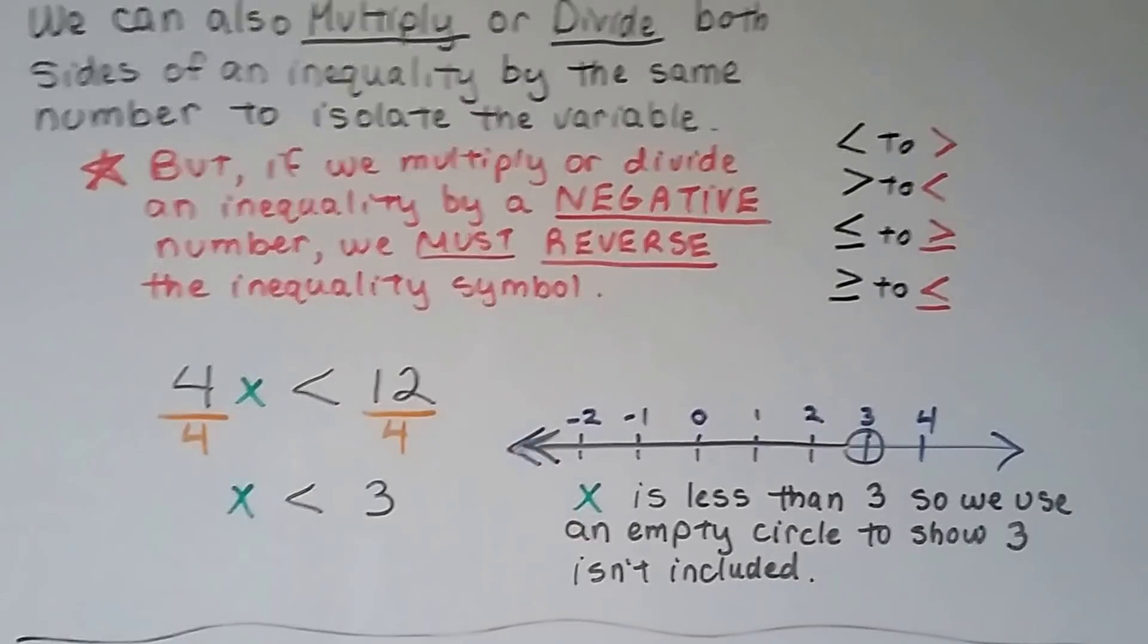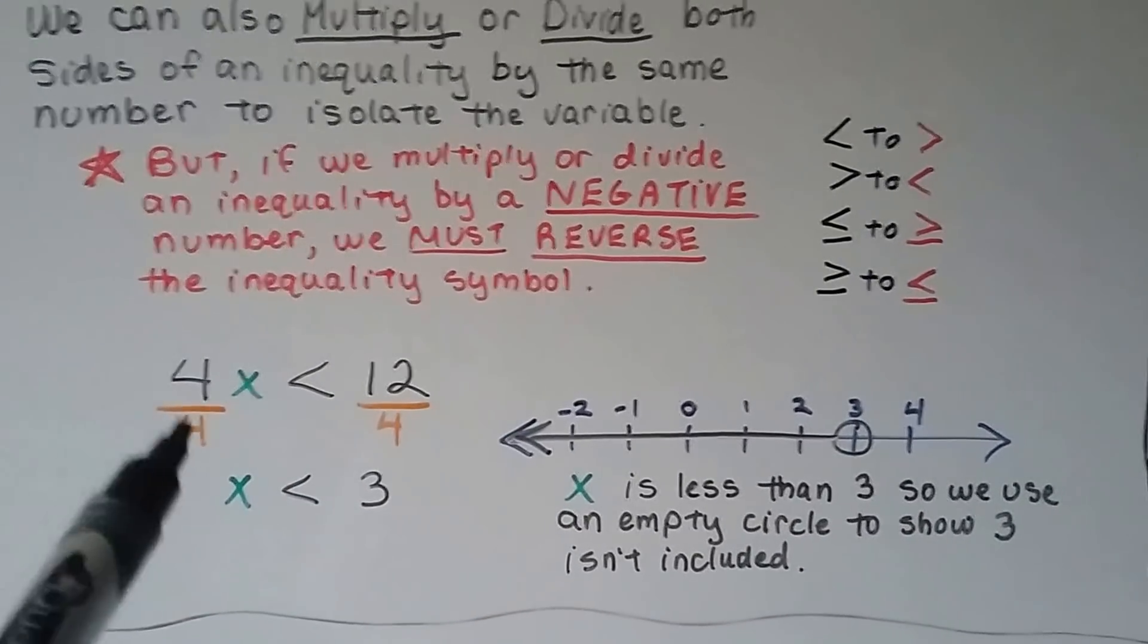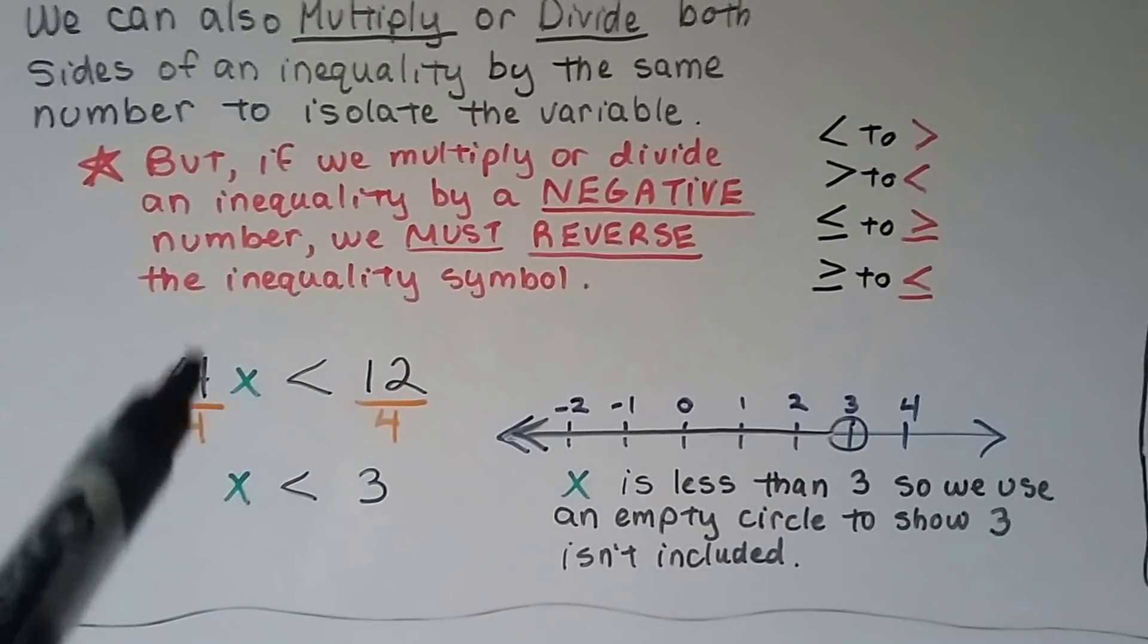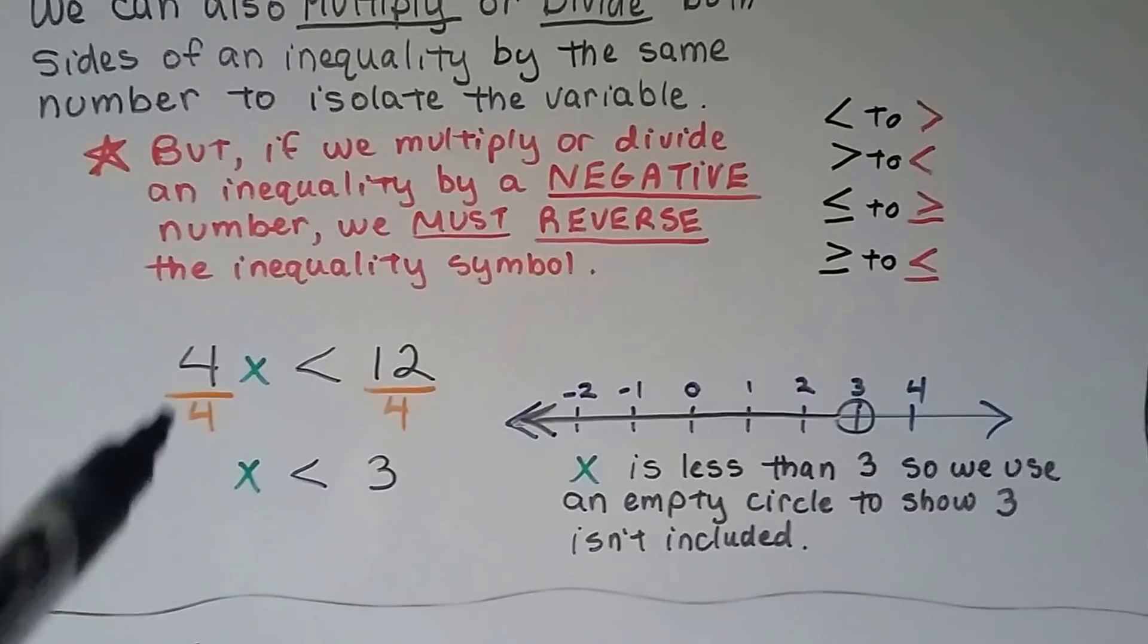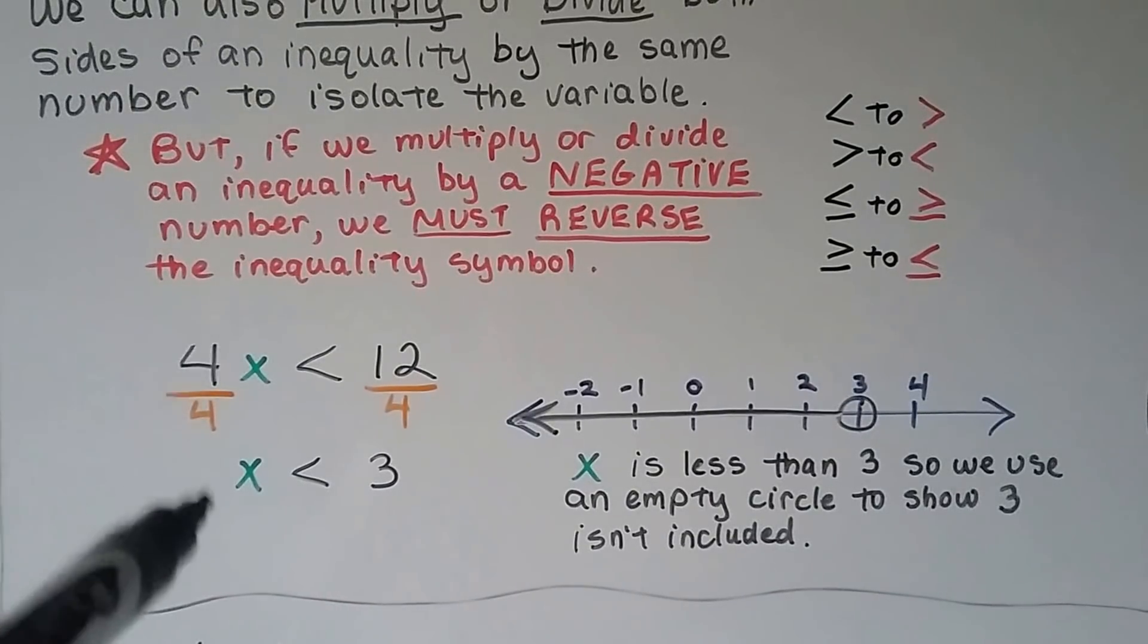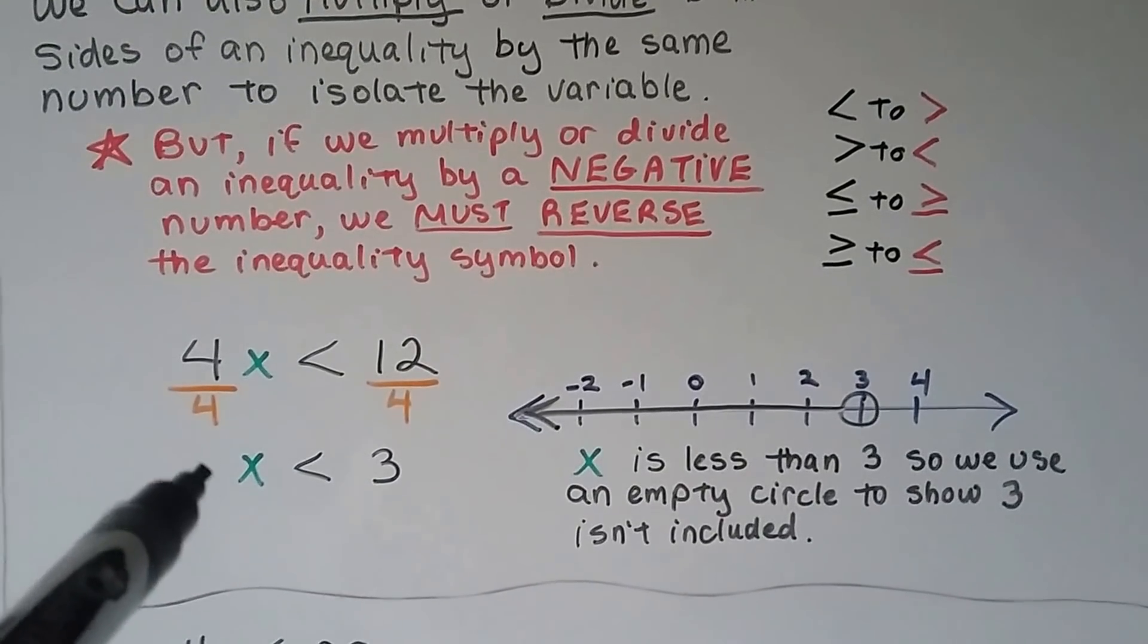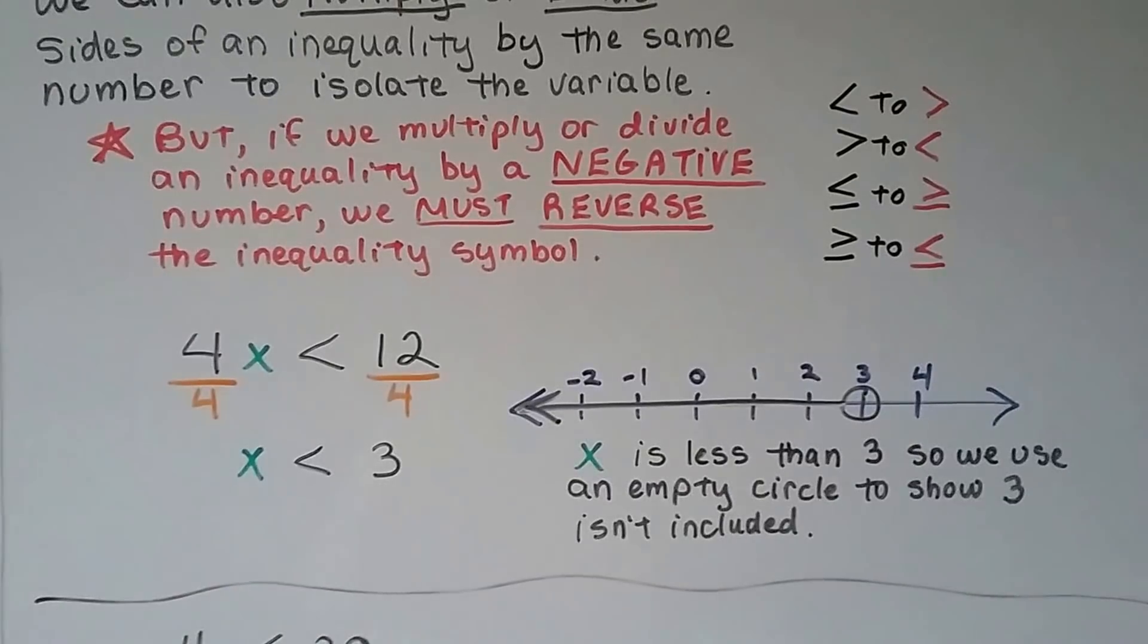We've got 4x is less than 12. So we can divide both sides by this 4 coefficient just as if that was an equal sign. We've done that before. And this would become a 1x because it's got the same numerator and denominator. And that would be a 3 and we can graph it.